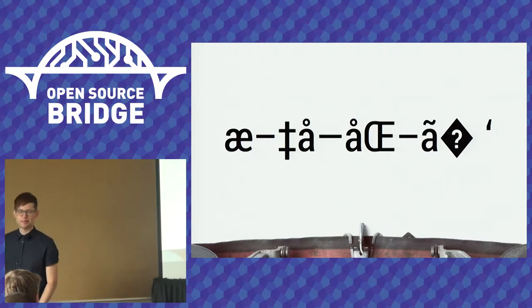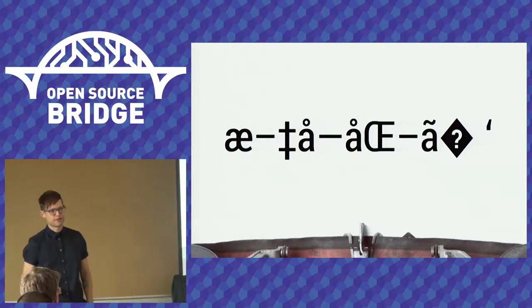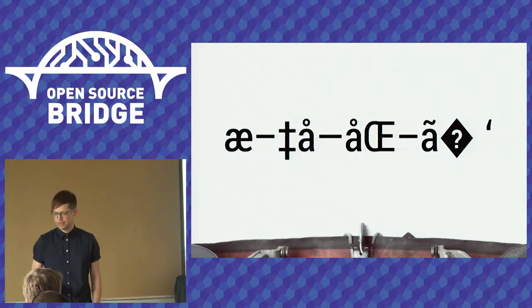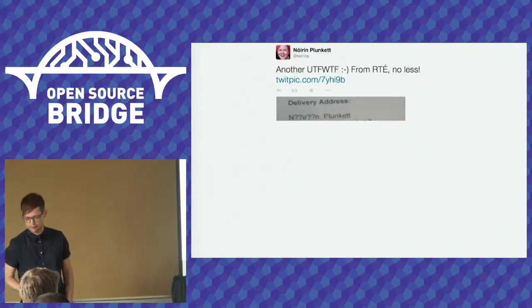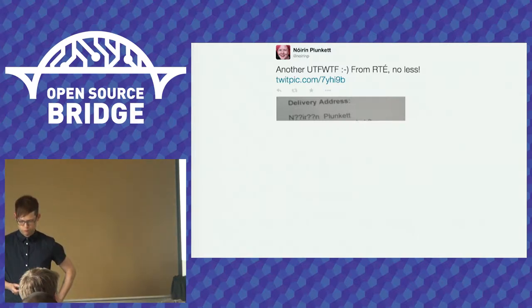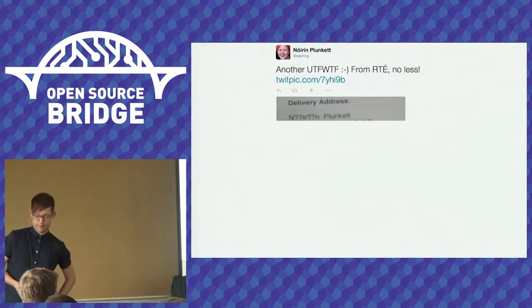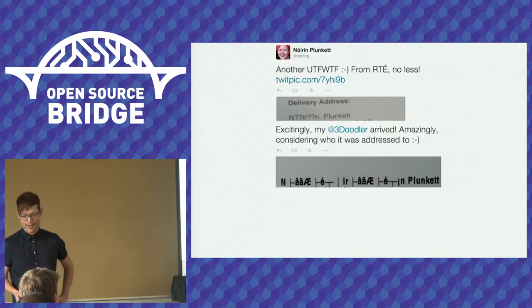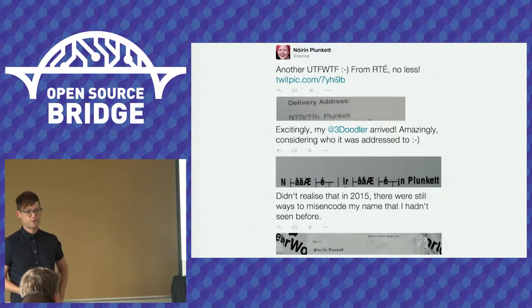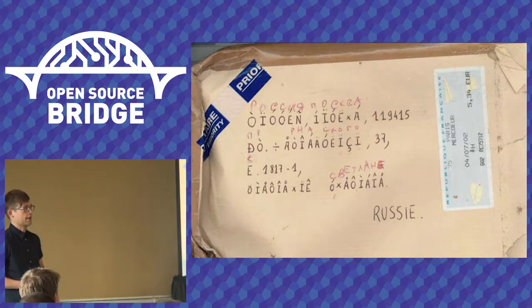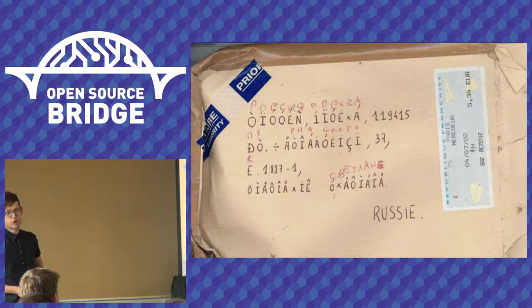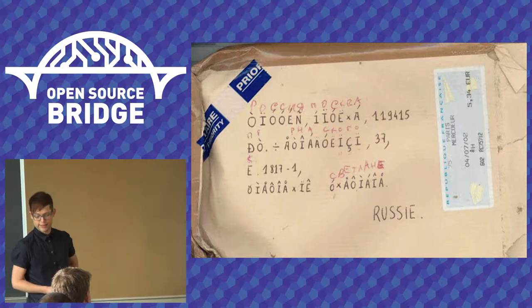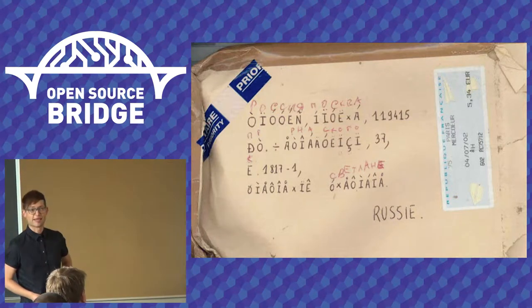I've collected some examples on Twitter because a lot of people experience these problems. Some people live their lives with a variety of different character encoding issues. Here are shipping labels showing character corruption. Somebody even handwrote mojibake in Cyrillic, sent it from Paris to Russia, and the Russian Postal Service decoded it and delivered it to the proper address.